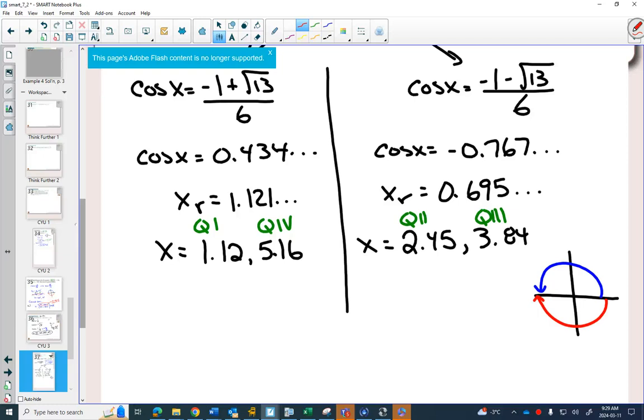So does it make sense that we have to take out this answer and this answer and rewrite them as negative coterminal angles? In quadrant 4, with a reference angle of 1.12, this will become -1.12.